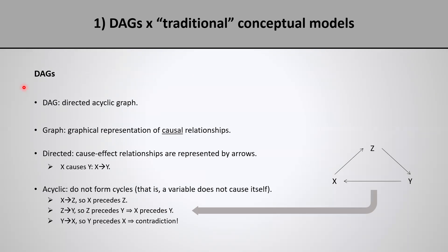So what is a DAG? A DAG is an acronym for directed acyclic graph. A DAG is a graph because it is a graphical representation of causal relationships. And as we're going to see throughout the course, being able to represent graphically and visually assumed causal relationships between variables is very useful for causal inference.